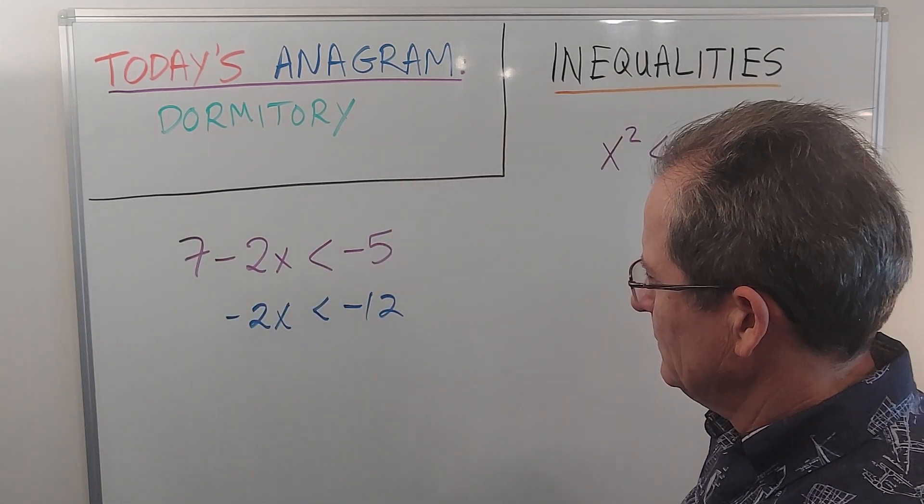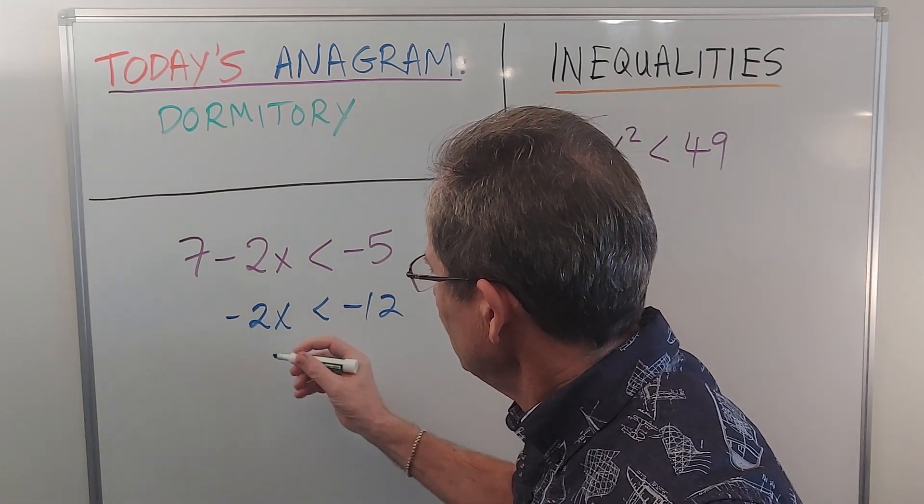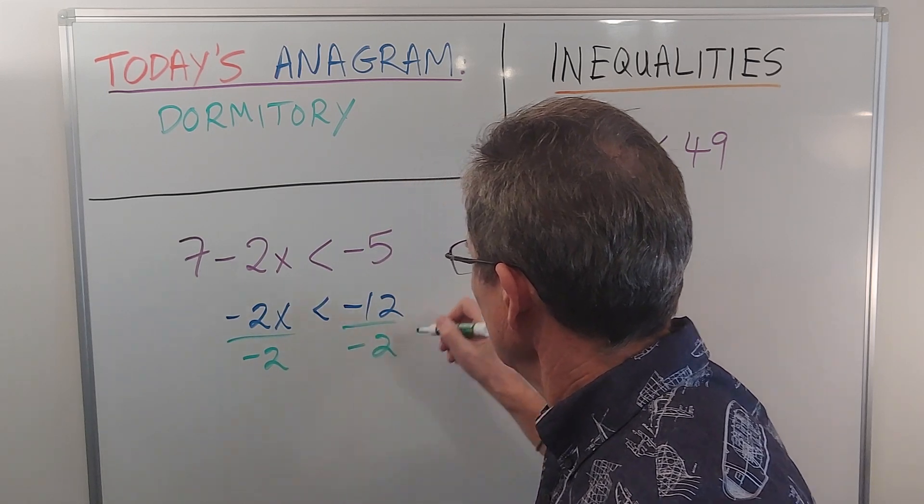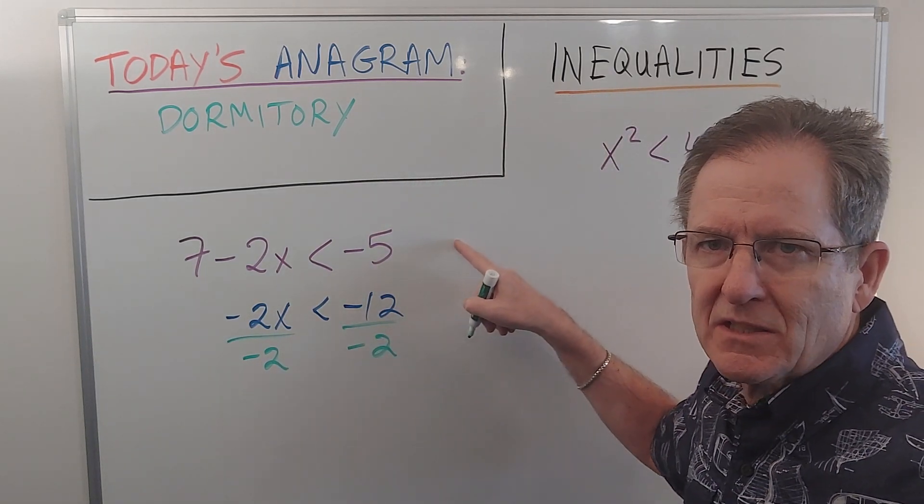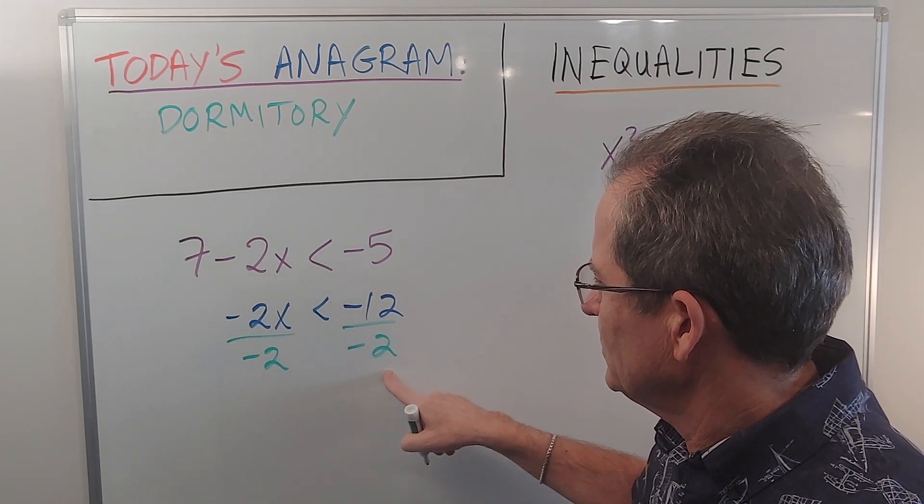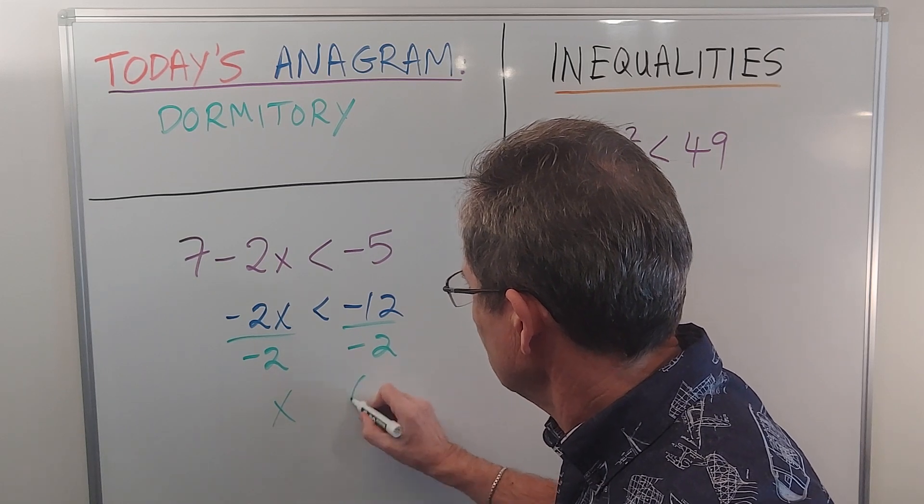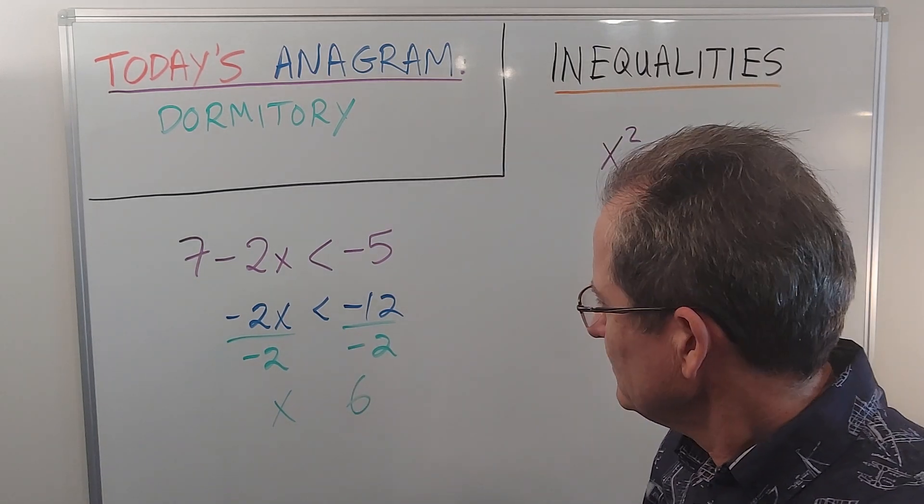And then we've got to divide by negative 2 on both sides. In this case, a lot of people do like to show this. They don't tend to show the subtraction of 7 on both sides, but a lot of people like to show that. So let's just show that. The left hand side becomes x, the right hand side becomes 6, so x is less than 6, right?